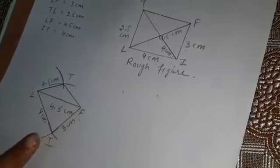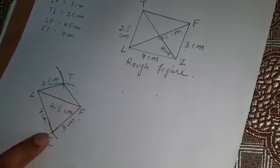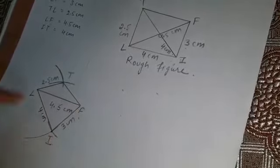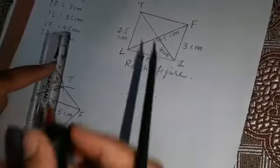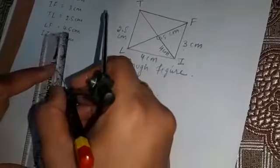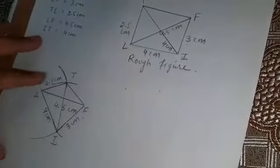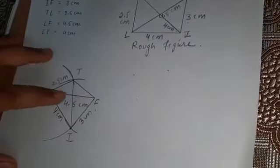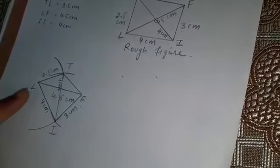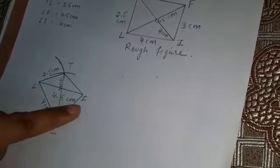This is the difference between Exercise 4.1 and Exercise 4.2 — in 4.1 the arc is taken from the other point, but here we take the arc from point I, because both diagonals are given. Join this, and the diagonals must be shown in the figure. The measurement of diagonal IT is 4 centimeters, so write that down. All measurements must be marked. This is the required figure LIFT.